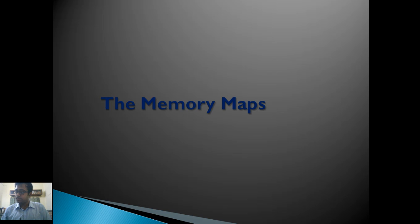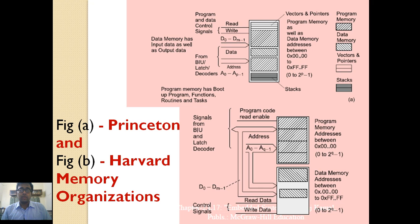Let's start with memory mapping. In figure A, we have Princeton memory organization, and in figure B, we have Harvard memory organization. Both organizations have different names as well as some different architecture — only very small, minute details have been changed in both memory organizations.